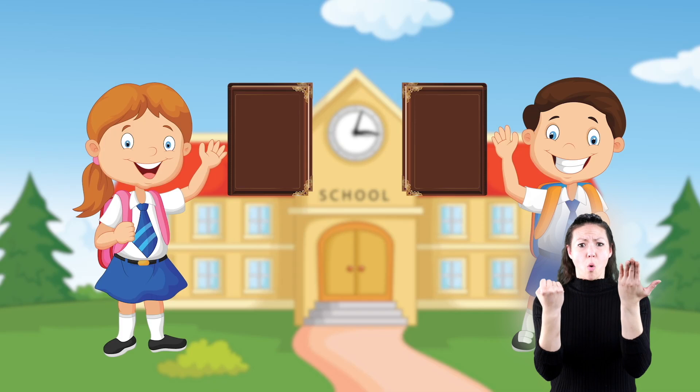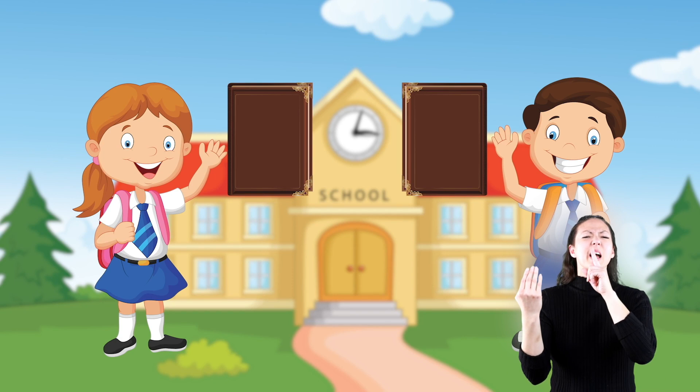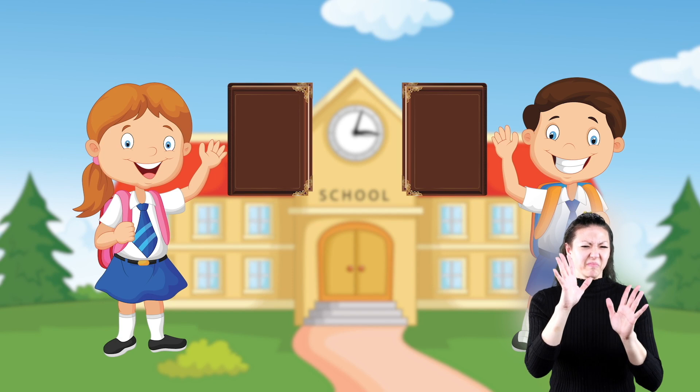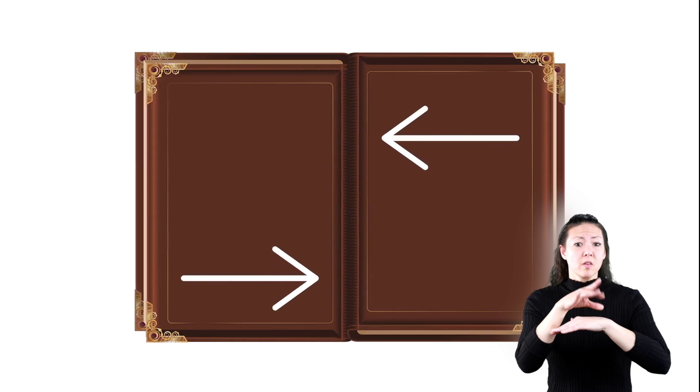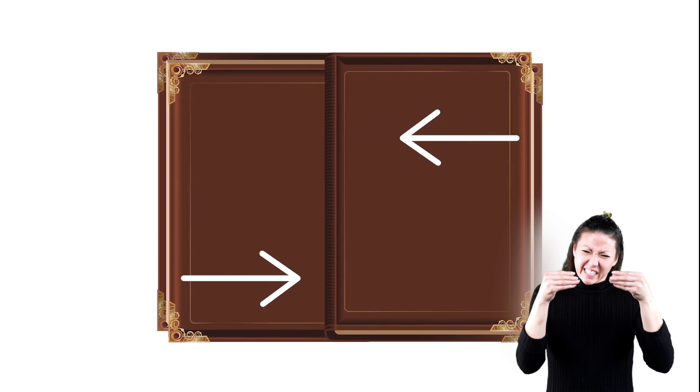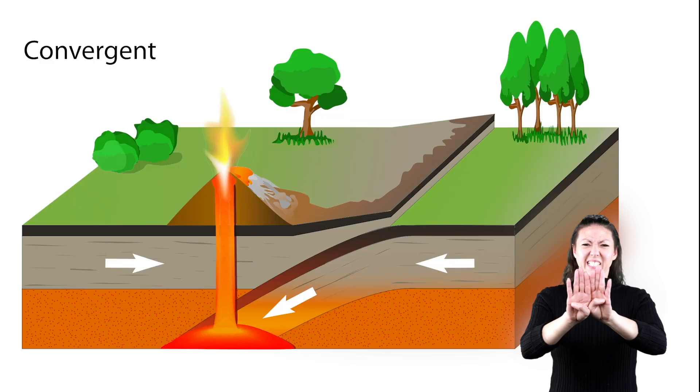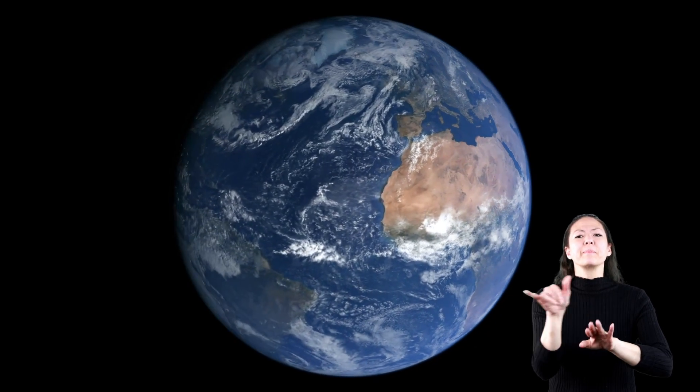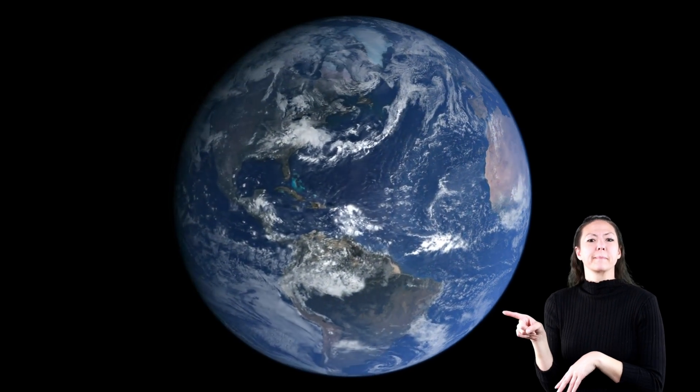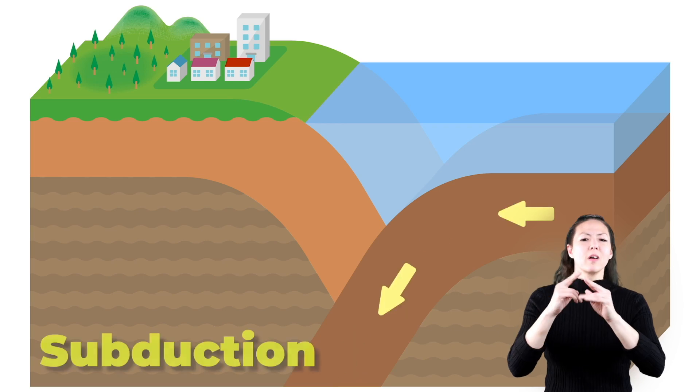Imagine you have two big textbooks. You're holding one and your friend is holding the other. Now let's pretend those textbooks are the plates under the earth. If you and your friend push those textbooks up against each other really hard, one book might be forced under the other. That's a convergent boundary. So in the case of the plates under the earth, when you have a convergent boundary, one plate slides under the other in a process called subduction.